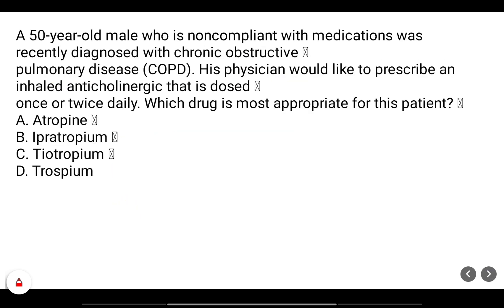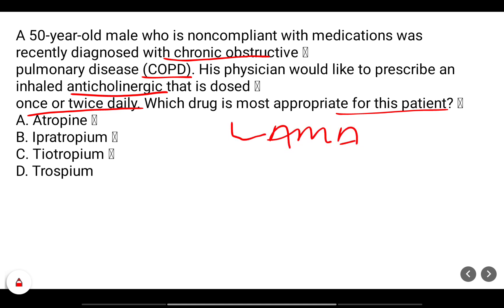A 50-year-old male patient who is non-compliant with medication was recently diagnosed with COPD. His physician would prescribe an inhaled anticholinergic dosed once or twice daily. If it needs to be given once or twice daily, we must choose a LAMA — long-acting muscarinic antagonist. Tiotropium is a LAMA, whereas ipratropium is a SAMA — short-acting muscarinic antagonist.